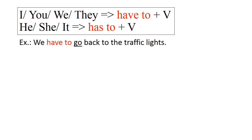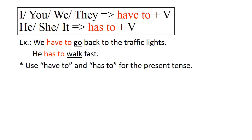We have to go back to the traffic lights. Or: He has to walk fast. We use 'have to' and 'has to' for the present tense.